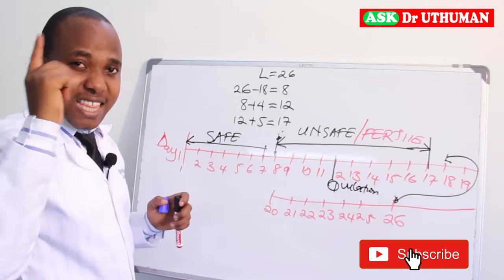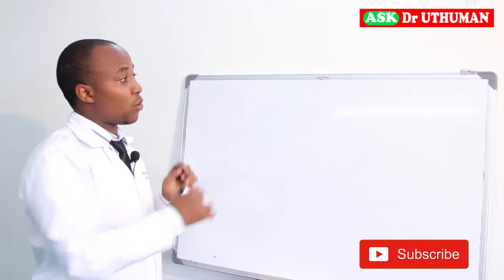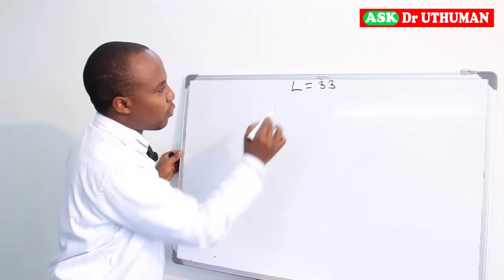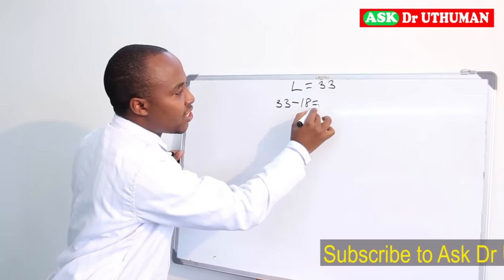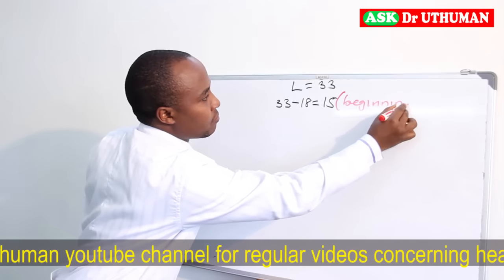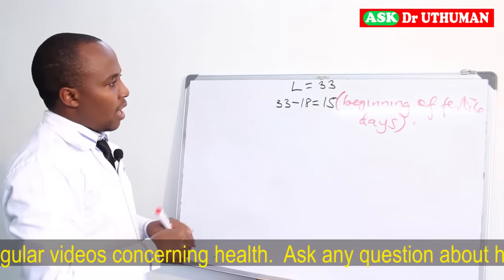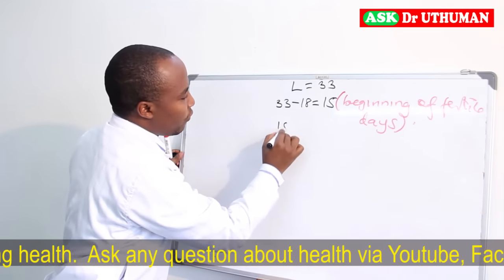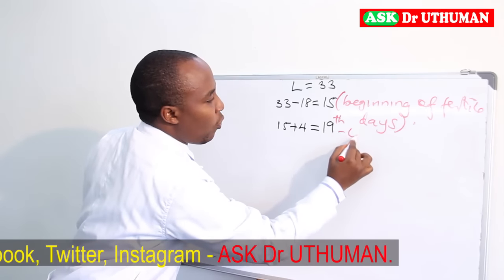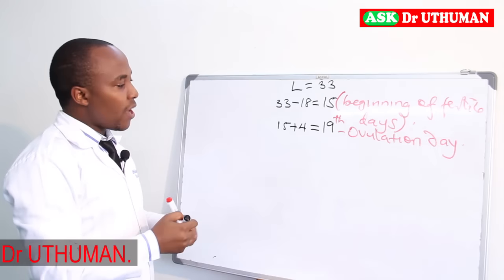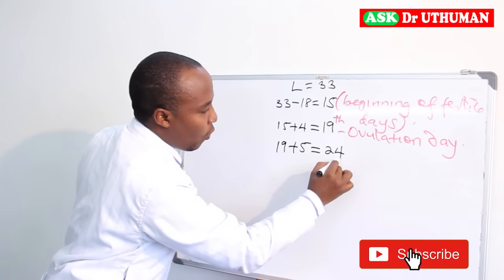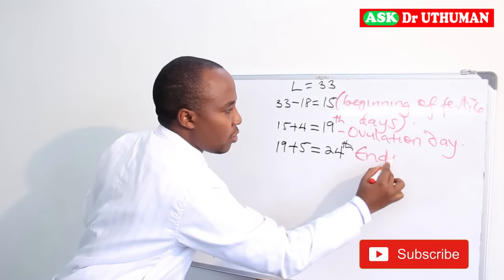The last example is the 33-day cycle. With a 33-day cycle, L equals 33. The fertile days begin from 33 minus 18, which is 15 — so the 15th day is the beginning of your fertile days. The ovulation day will be 15 plus 4, which is 19 — therefore the 19th day is the ovulation day. The fertile days end at 19 plus 5, which is 24 — therefore the 24th day is the end of your fertile days.